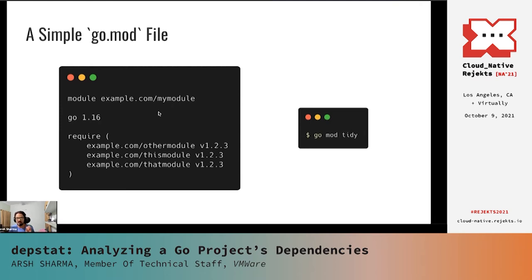Please note that the go.sum file is auto-generated based on your go.mod file, and you should never need to edit it manually. To keep your managed dependency set tidy, you can use the go mod tidy command. Using the set of packages imported in your code, this command edits your go.mod file to add modules that are necessary but missing. It also removes unused modules that do not provide any relevant packages. So, for example, if you stop using the packages provided by example.com/this-module, when you run go mod tidy, it'll remove example.com/this-module from your go.mod file. And lastly, go mod tidy will also regenerate the go.sum file based on your updated go.mod file.